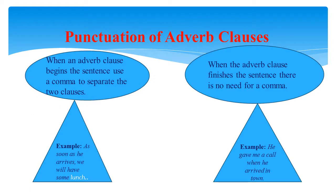Adverb clauses of place answer the question where. Adverb clauses of time answer the question when. Adverb clauses of cause answer the question why. Adverb clauses of purpose also answer the question why. Adverb clauses of condition answer the question how. Adverb clauses of concession also answer the question how. While adverb clauses are a little more complicated than simple adverbs, they are very useful in adding rich detail to your writing by explaining how and why things happen. When you begin to add subordinating conjunctions and dependent clauses to your writing, you add interest by varying the rhythm of your sentences and layering in important information to create a complete picture for the reader.